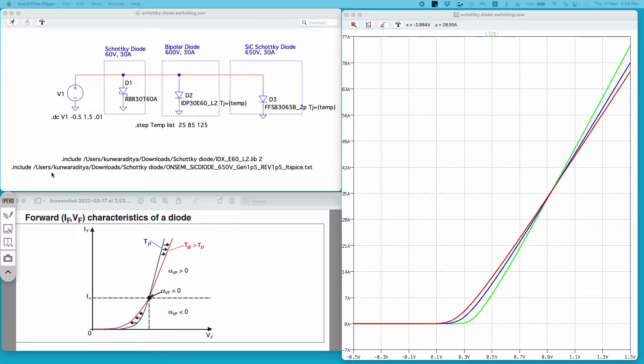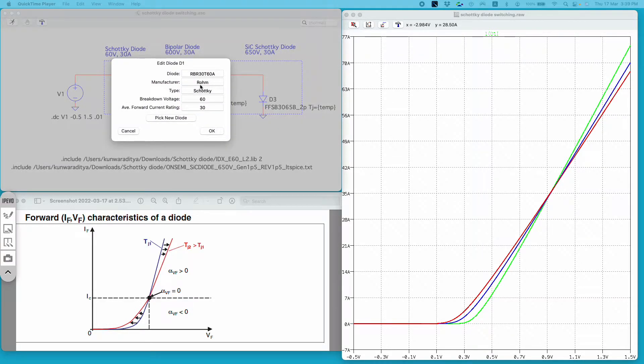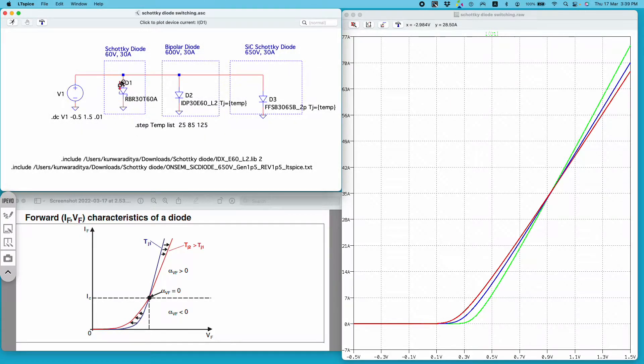Hello everyone, my name is Kumar Althitya and in this video I will discuss the characteristics of a Schottky diode. I have used this 60 volt 30 amp diode from the LTSPICE library. It's from Onsemi and to plot its IV characteristics I am sweeping this V1 from minus 0.5 volt to 1.5 volt in the increment of 0.01 volt.